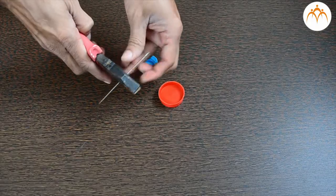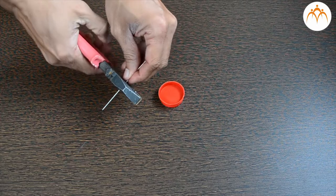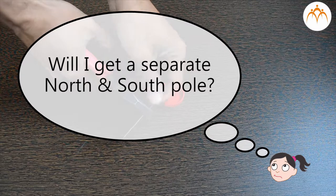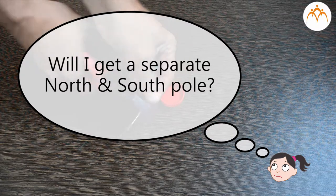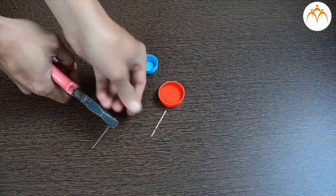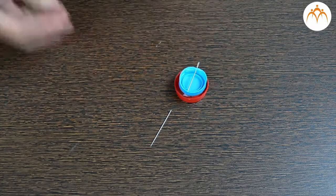What will happen if I break this needle magnet in half? Will I get a separate north pole and a south pole? Let us find it out. We will gently break this needle with the help of pliers. Now we will place each part into a bottle cap and let it float.